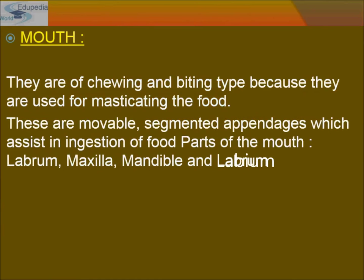The mouthparts are of the chewing and biting type, used for masticating food — breaking complex food into simpler particles. The head is triangular in shape and lies anteriorly at right angles to the longitudinal body axis. The mouth has segmented appendages which assist in ingestion of food. The four parts of the mouth are: labrum, maxilla, mandible, and labium.